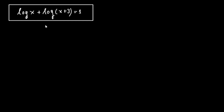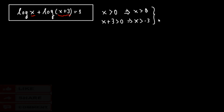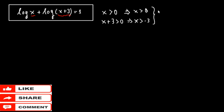First of all, we must notice that we have logarithms, so the numbers inside the logarithms — x and x plus 3 — must be greater than 0. So we have that x must be greater than 0, and x plus 3 must be greater than 0. From the second condition, x must be greater than minus 3, and from the first, x must be greater than 0. So from these two, we can accept solutions only if they are greater than 0.